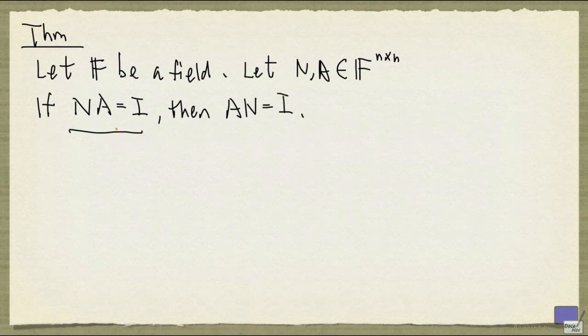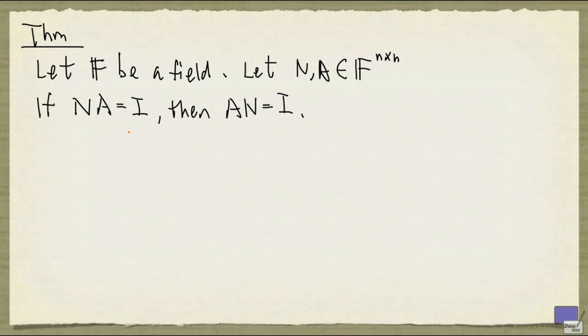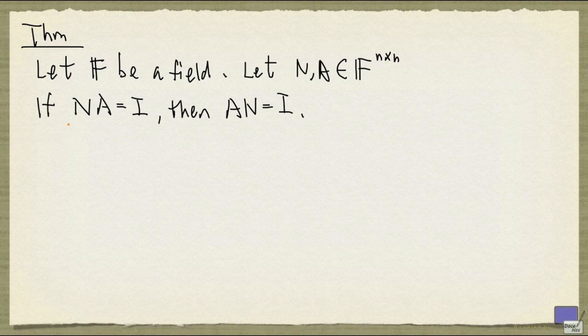Now if we interpret this N times A equal to I to mean A is the right inverse of N, then A is also the left inverse of N. So there's no distinction between right and left inverses. We'll give a proof of this in the next video.